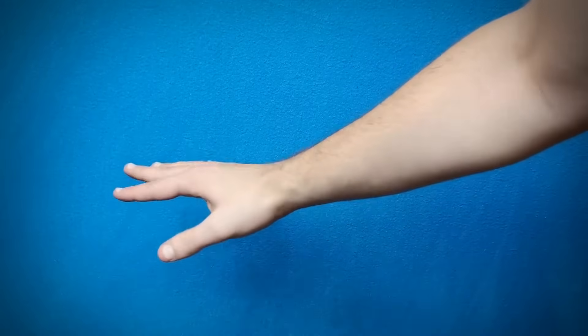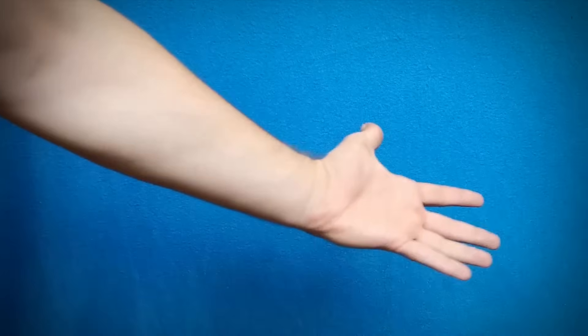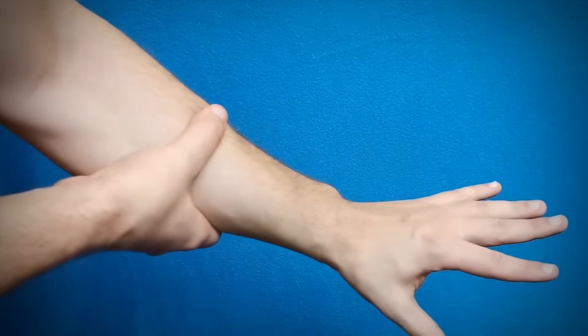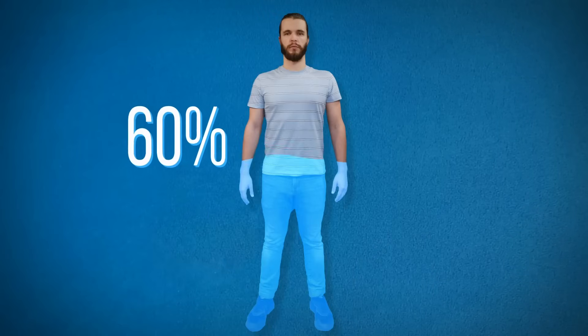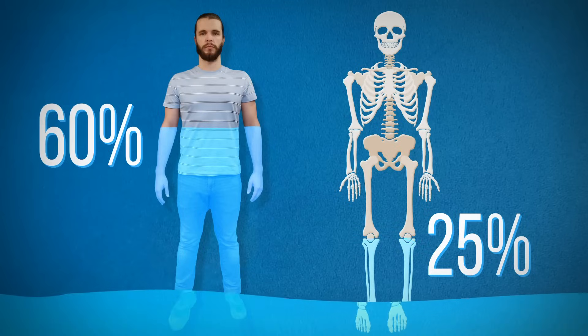Whenever you rotate your hand, the bones inside your forearm cross. Grab hold of your arm and turn your palm to face first upward and then downward. You'll make sure it's true. Not only is your body 60% water, your bones contain some liquid too. About 25% of the human bone mass is made up of water.